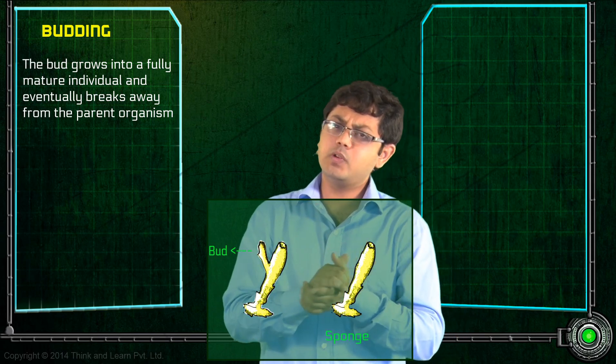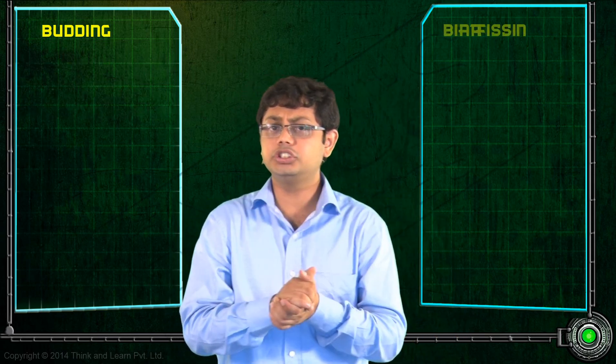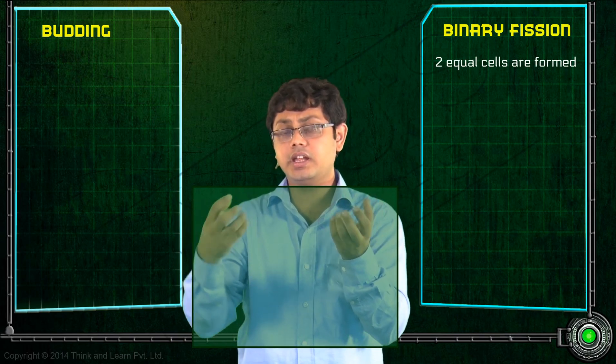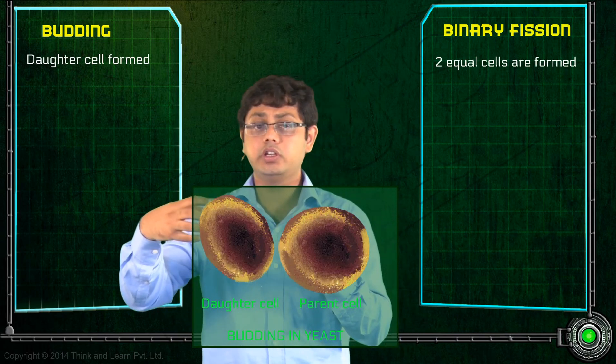So what is the difference between budding and binary fission? The fact is, in binary fission, there are two equal cells which are formed, whereas in budding, the daughter cell is actually going to be small.